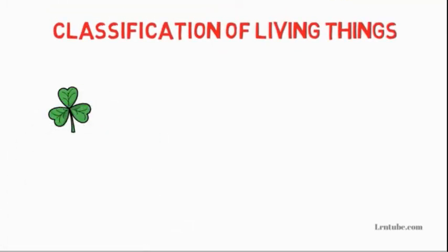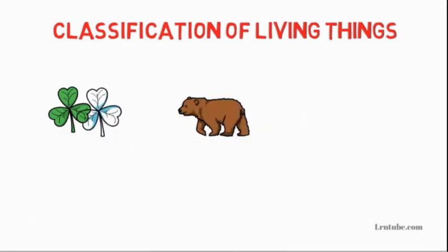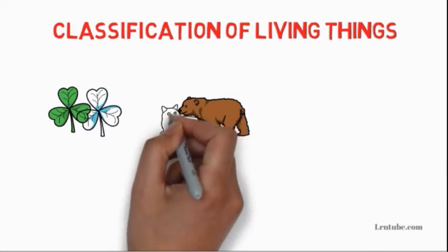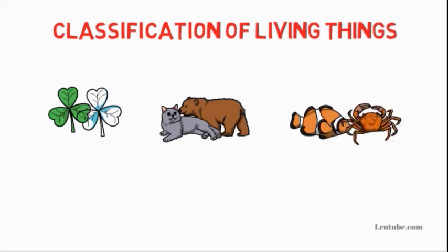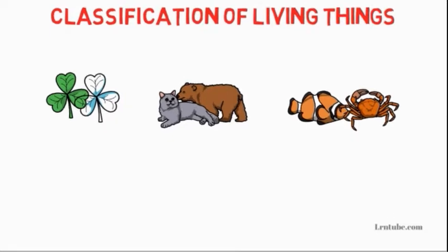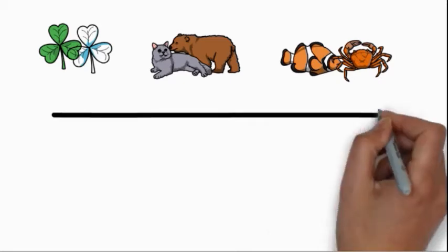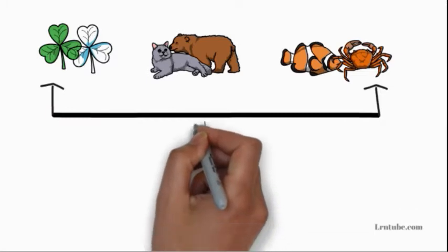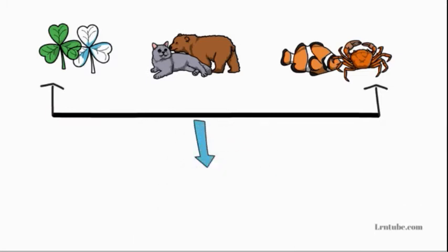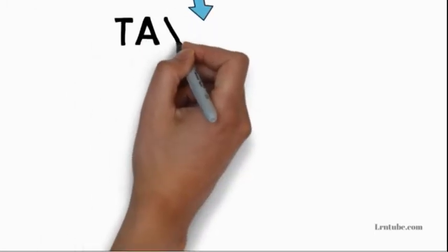Classification can be defined as arranging organisms in different groups based on observed characteristics. These organisms are placed in a particular group because they behave in a certain way. In a particular group, they should have similar characteristics.